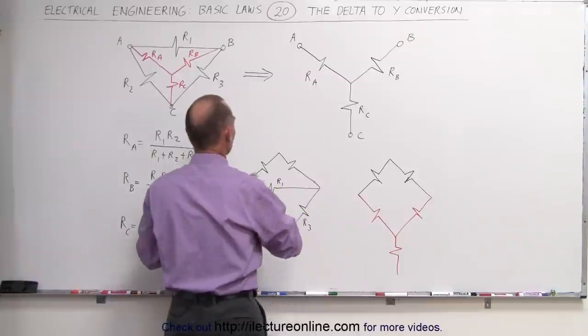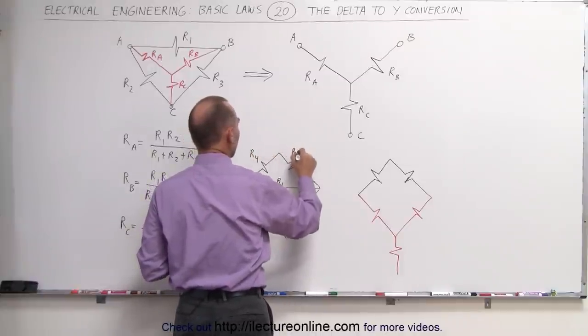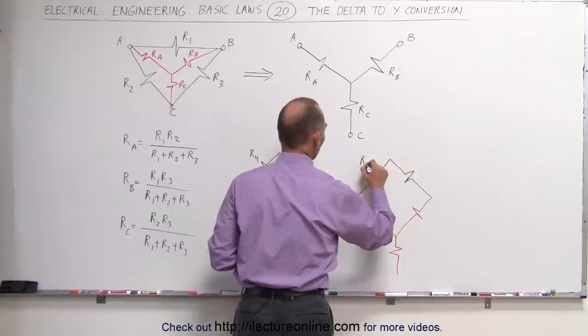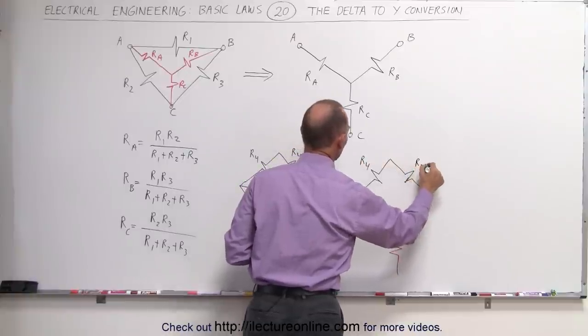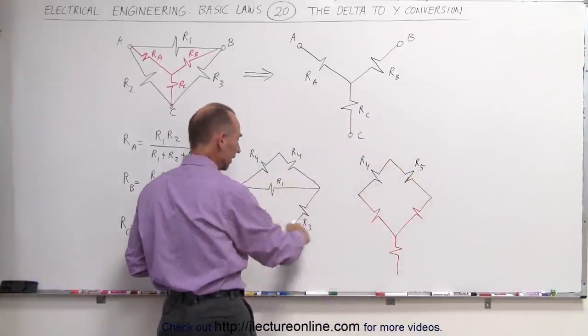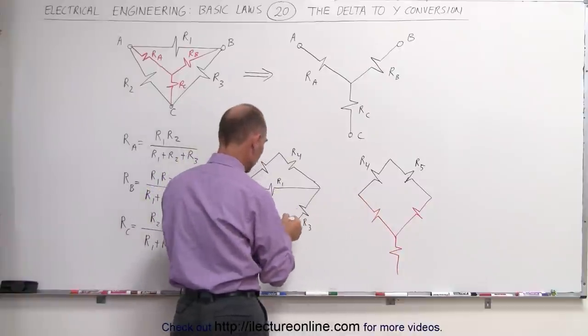If we call this, let's say R4 and R5, just to give it a name, and so this is still R4 and R5, notice that the bottom portion of it, that delta, now gets converted to a Y, and this now,